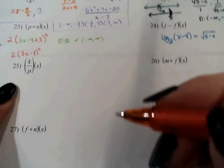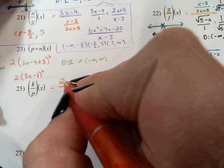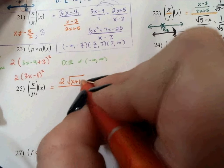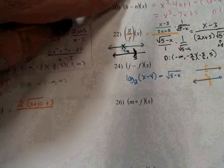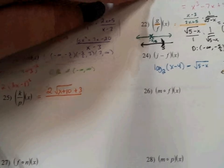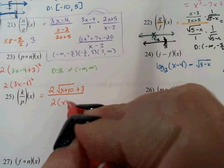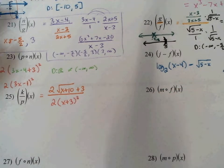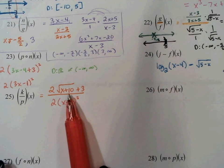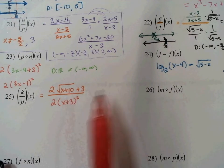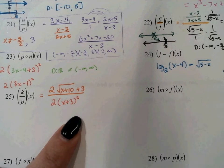Next, k divided by p. The function k is 2 square roots of x plus 10, plus 3. And p is the quadratic, 2 times the quantity x plus 3, squared. The first one only exists from negative 10 to infinity, and this one exists everywhere — except now that we have it in the denominator.